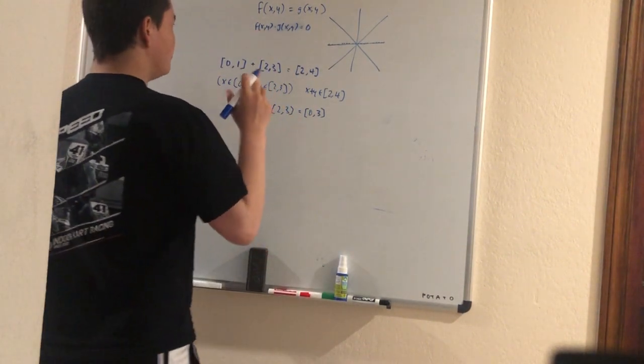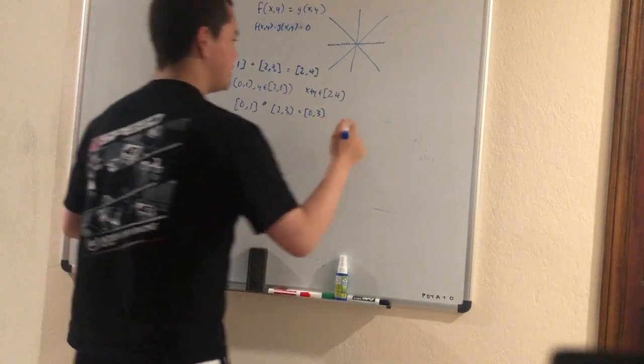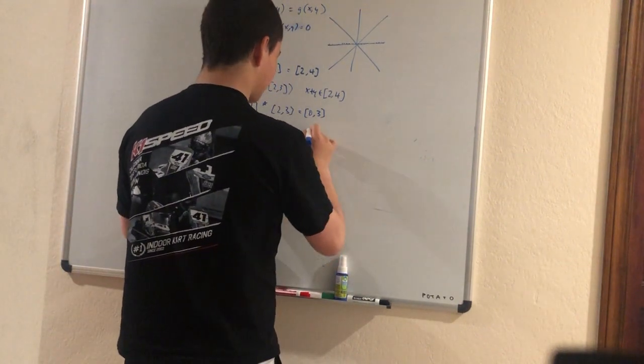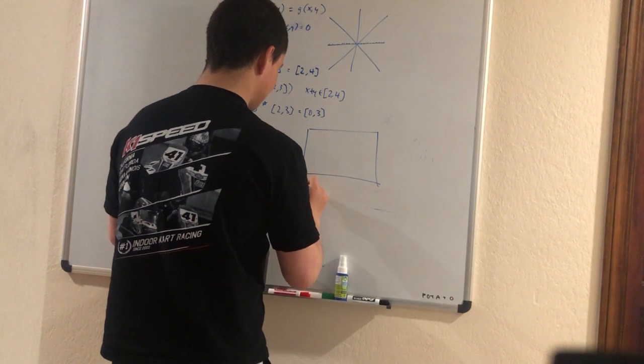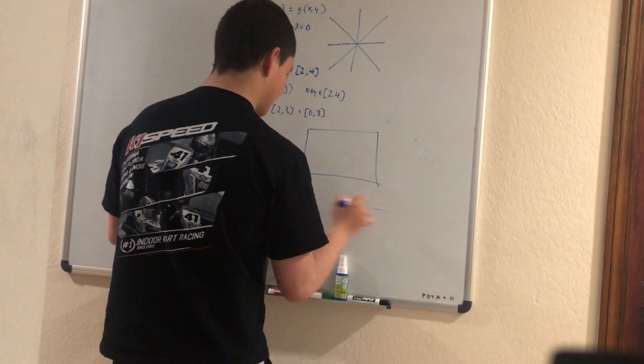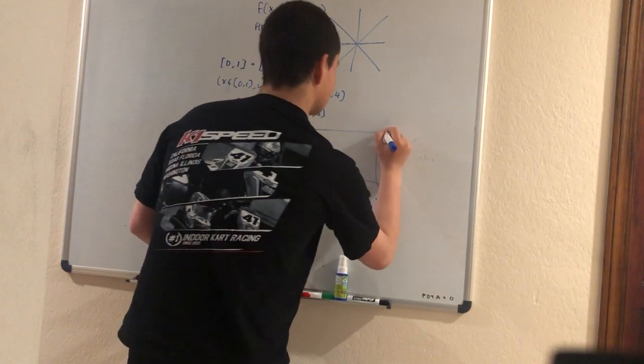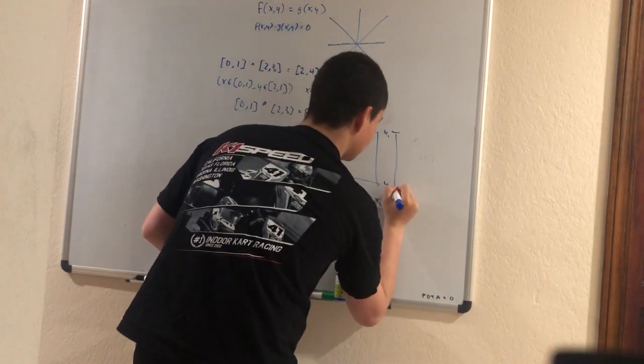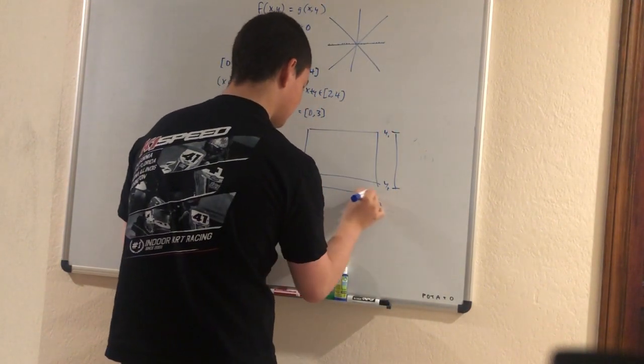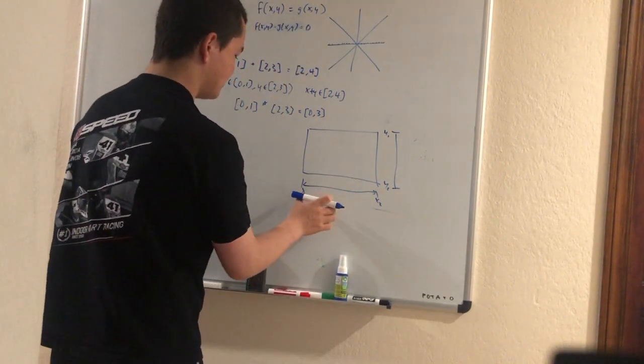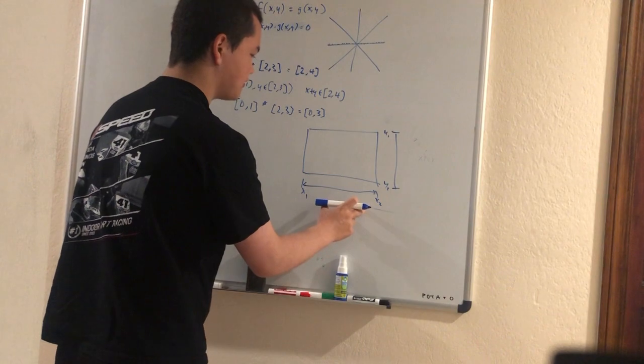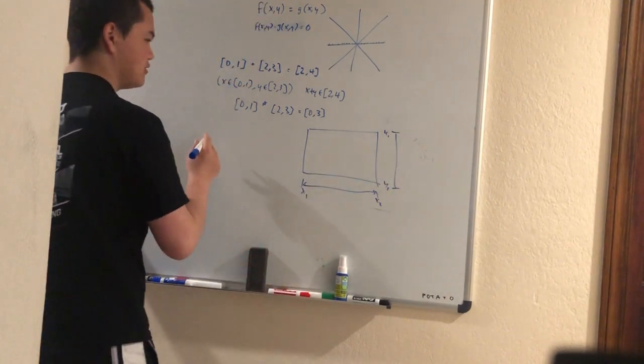So, we first take a rectangle, which is the entire plotting space. So suppose this is x1 to x2, and this is y1 to y2. Then we look at this rectangle, and we plug in [x1, x2] as the value for x, and [y1, y2] as the value for y.